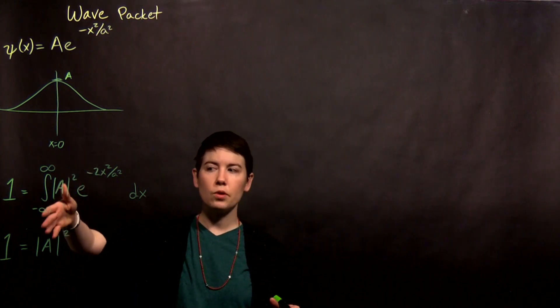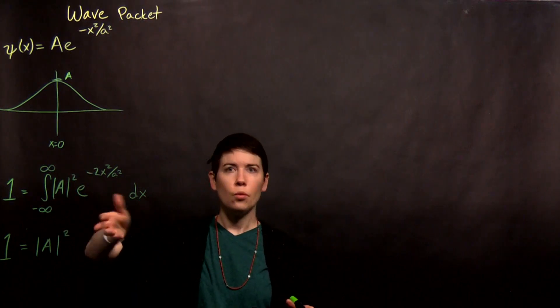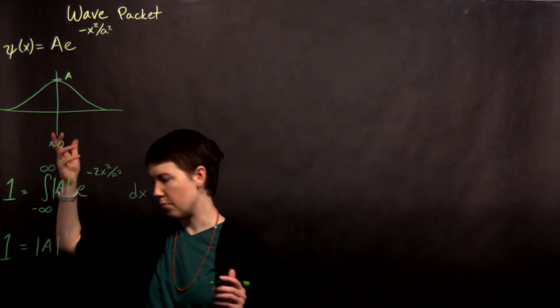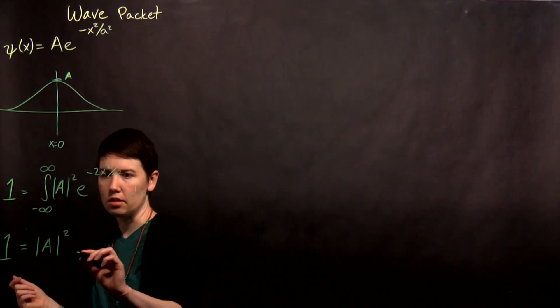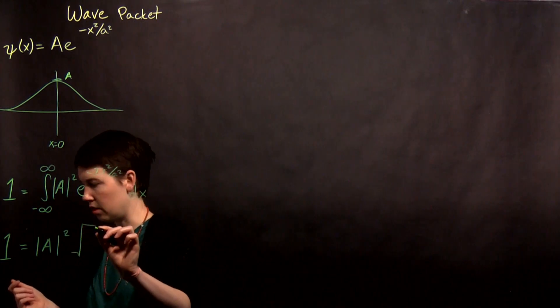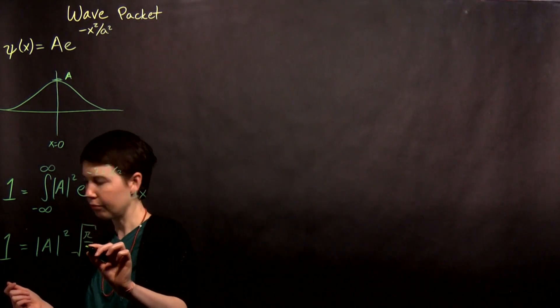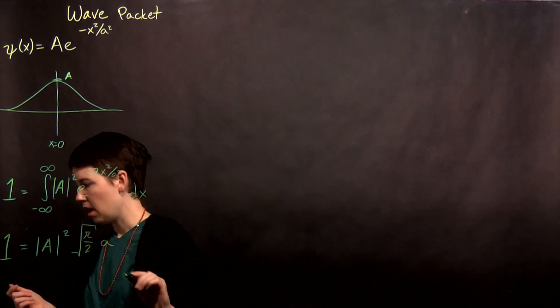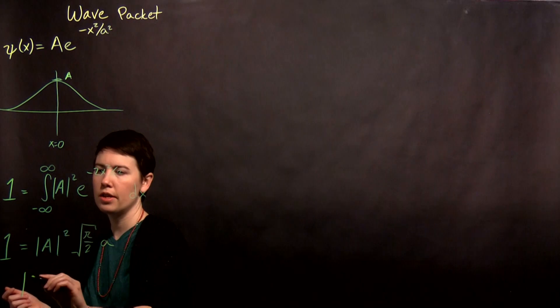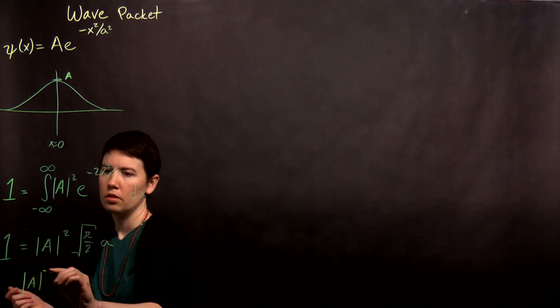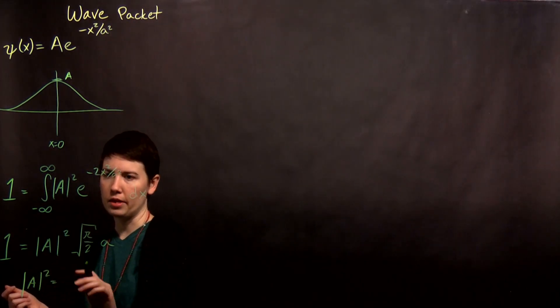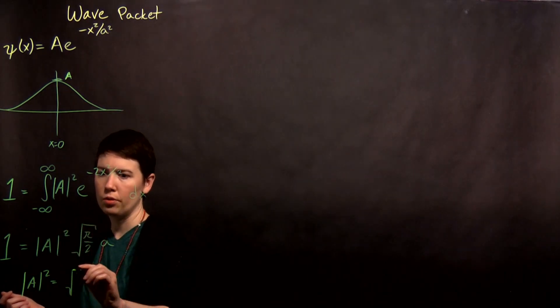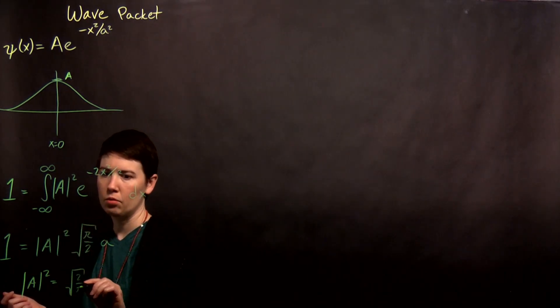But in this case, because we're integrating over all space, we don't actually need that. We can just say what this integral is. So this is something you would get from the book, and it is square root of pi over 2 times a. And so we would rearrange, and you then get that your a squared value is square root of 2 over pi, 1 over a.